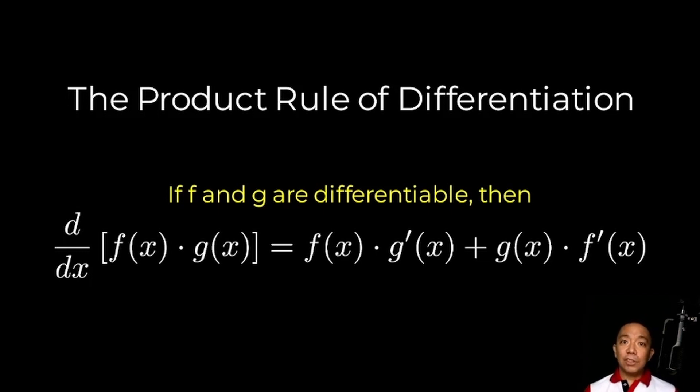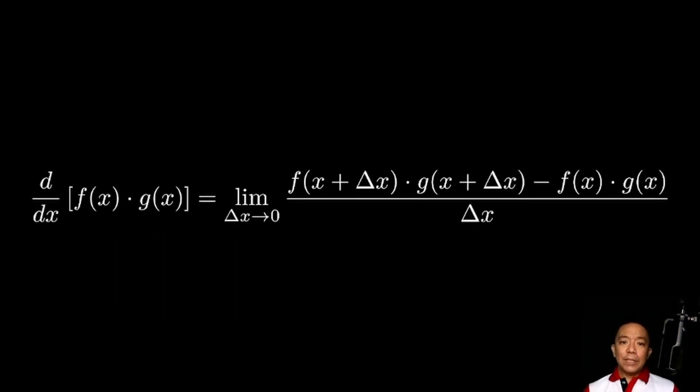Let's derive this formula from the definition. By definition, the derivative of f times g, this is the limit as delta x approaches zero of f times g of x plus delta x minus f times g of x all over delta x.